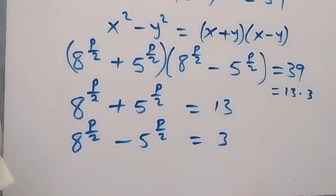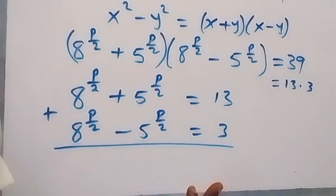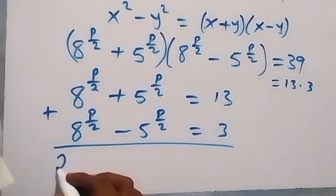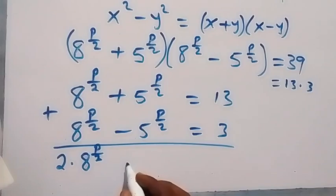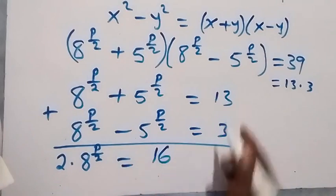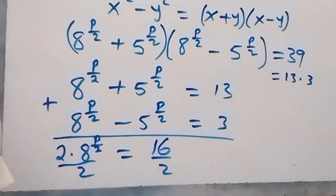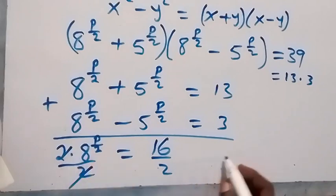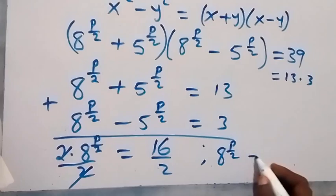We can eliminate 5 raised to power p over 2 by adding these two equations. This gives us 2 multiplied by 8 raised to power p over 2, since the 5-terms cancel out, equals 13 plus 3, which is 16. Dividing by 2, we have 8 raised to power p over 2 equals 8.